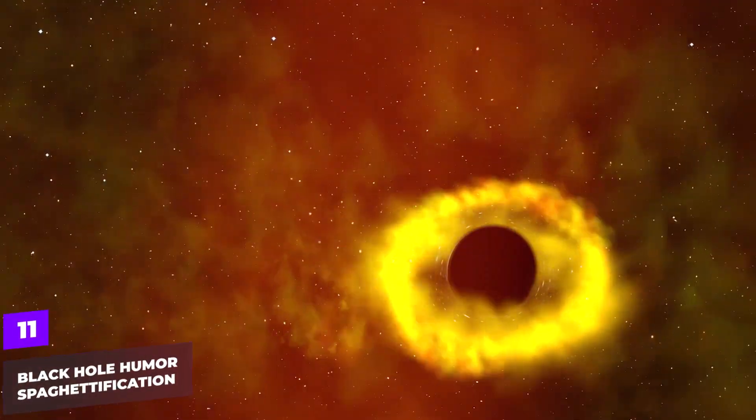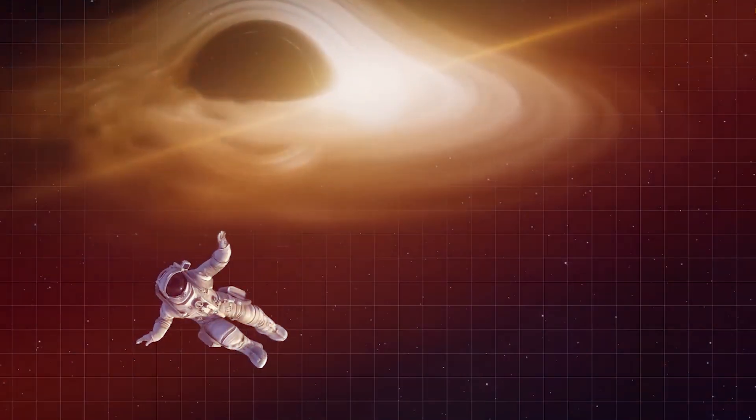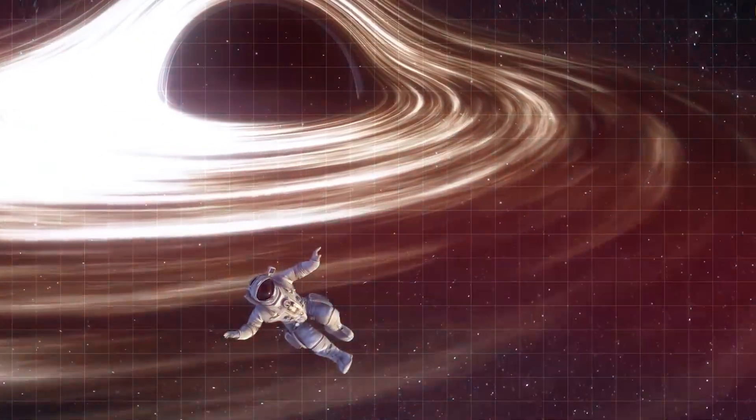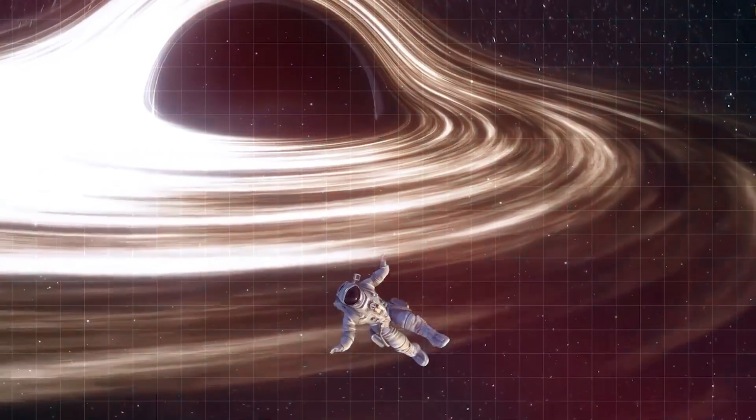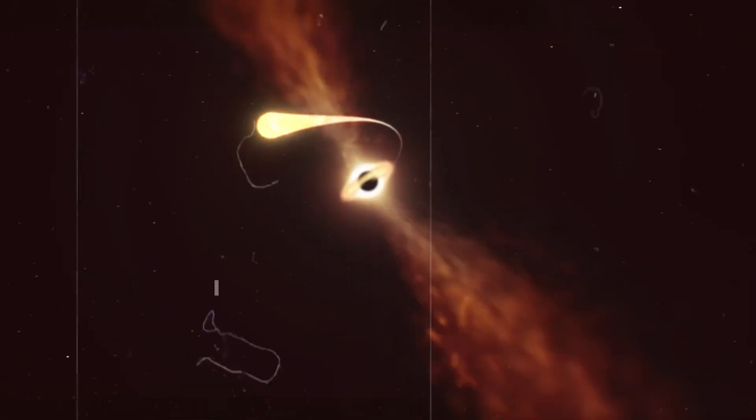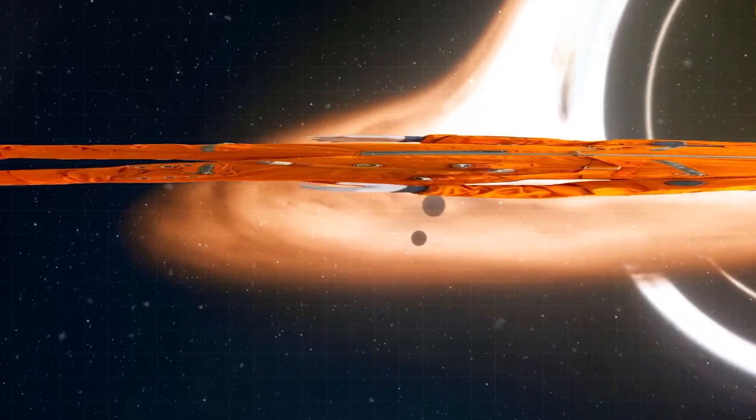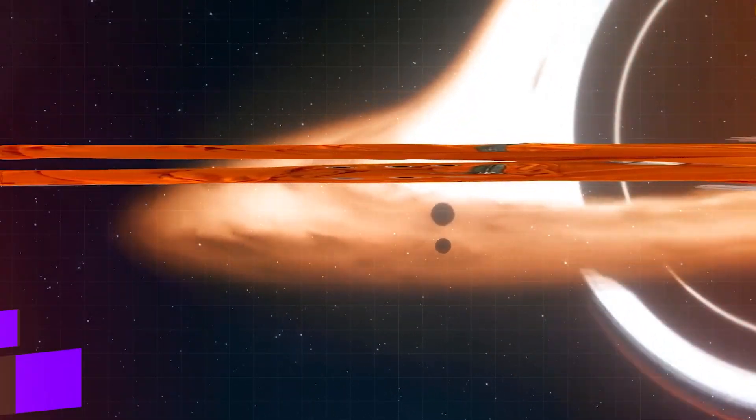Black hole humor: spaghettification. If you were to approach a black hole and eventually cross its event horizon, the gravitational pull on your feet would be significantly stronger than on your head, stretching you out like spaghetti. This process, humorously referred to as spaghettification, would be a bizarre and fatal journey into a black hole.